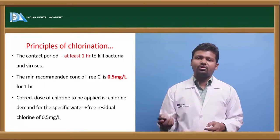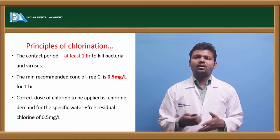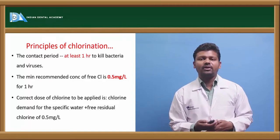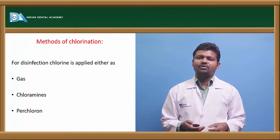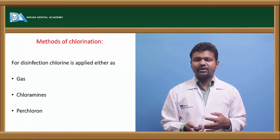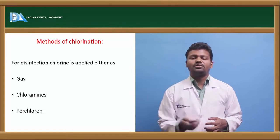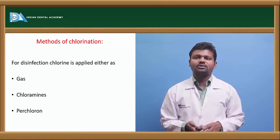The contact period in chlorination of water should be around 1 hour. The concentration of 0.5 milligram per liter should be maintained. Methods of chlorination can be done through gas, chloramines and perchlorons - these are the 3 methods for disinfection.